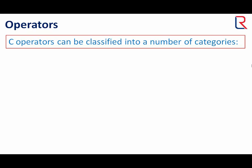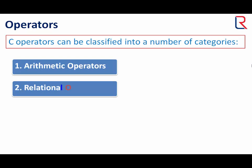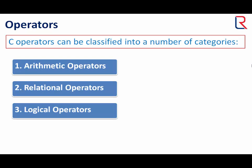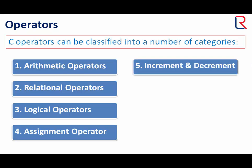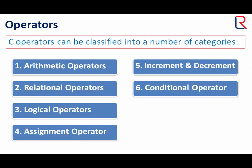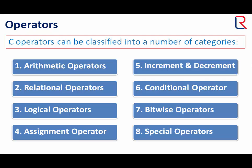C operators can be classified into a number of categories: Arithmetic operators, Relational operators, Logical operators, Assignment operator, Increment and Decrement operator, Conditional operator, Bitwise operators, and Special operators. In this video, we are going to see only the first four operators. The next four we will see in part two.